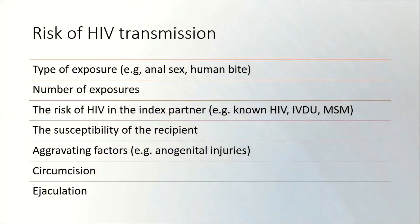Anogenital injuries can occur through consensual sex as well as non-consensual sex or sexual assaults, and can also occur during first intercourse — so that's something to look for and ask the patient about. Being circumcised reduces the risk of HIV transmission. If ejaculation has occurred, the risk is increased, and there may be other factors to consider as well.